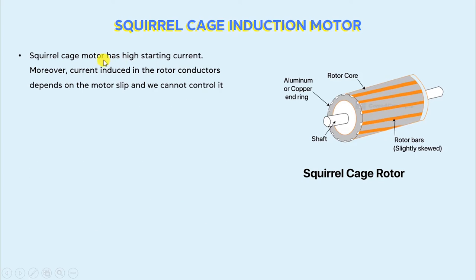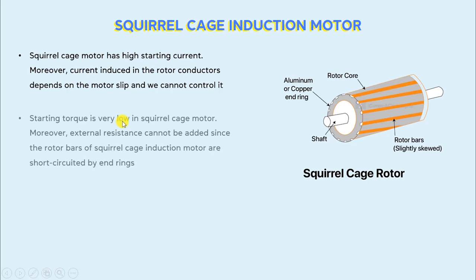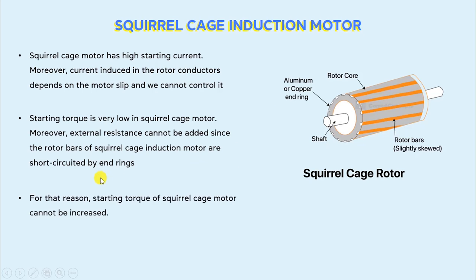A squirrel cage motor has a high starting current. Moreover, the current induced in the rotor conductors depends on the motor speed and we cannot control it. In the case of a squirrel cage induction motor, we cannot control the induced current, and they have a high starting current. Starting torque is very low in a squirrel cage motor. Moreover, external resistance cannot be added since the rotor bars of a squirrel cage induction motor are short-circuited by an end ring — this is the aluminum or copper end ring. Therefore, the starting torque of a squirrel cage motor cannot be increased due to the absence of external resistance.